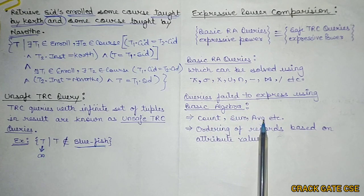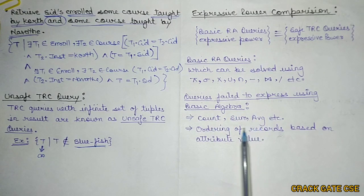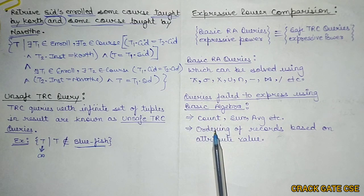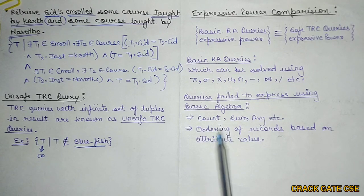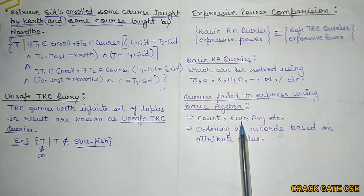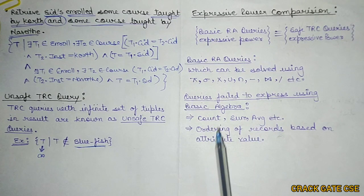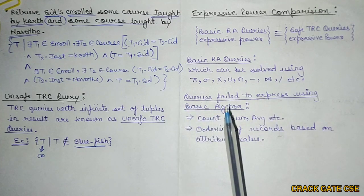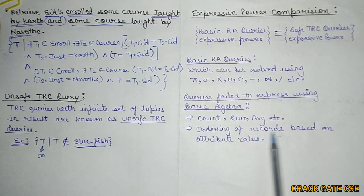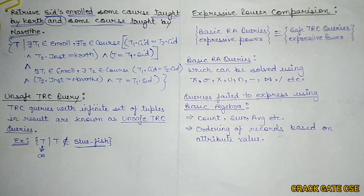Relational algebra is not able to express aggregate functions like count, sum, average, minimum, maximum, etc. And one more limitation is ordering records based on attribute values. But this ordering of records can be done in SQL by using the ORDER BY clause.